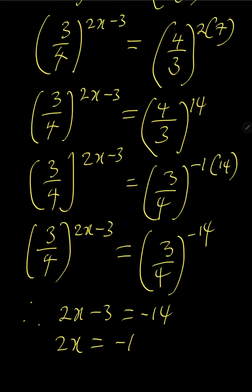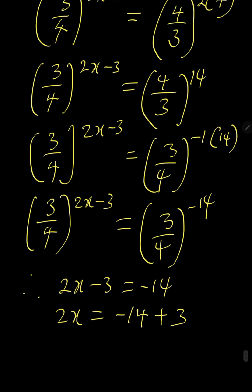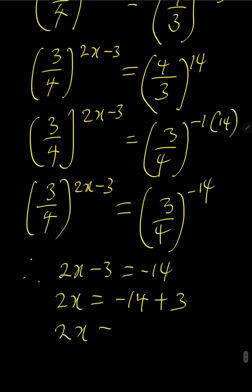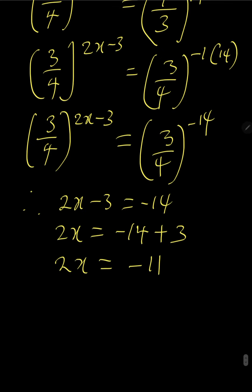The minus 3 will come to the right hand side. It will turn to plus 3. So we have 2x is equal to minus 11. So if 2x is minus 11, to get the value of x, divide everything by 2. By so doing, x becomes minus 5 and 1 over 2 or minus 5.5.